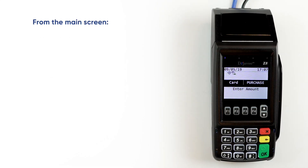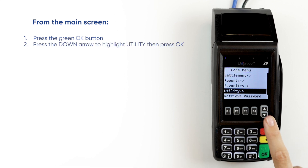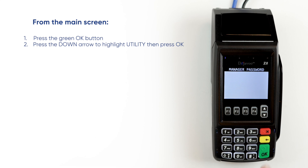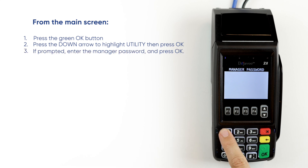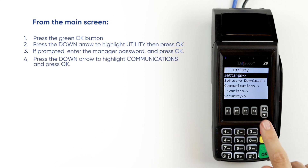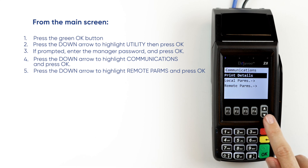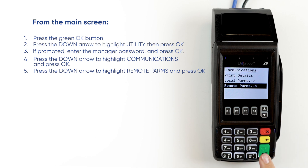From the main screen, press the green OK button. Press the down arrow button to highlight Utility, then press OK. If prompted, enter the manager password and press OK. Press the down arrow button to highlight Communications and press OK. Press the down arrow button to highlight Remote Partners and press OK.